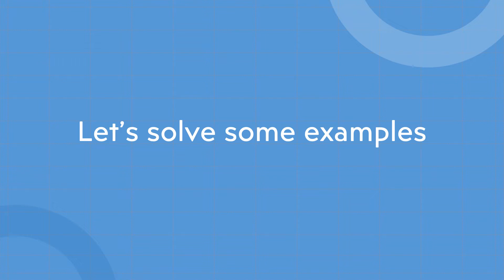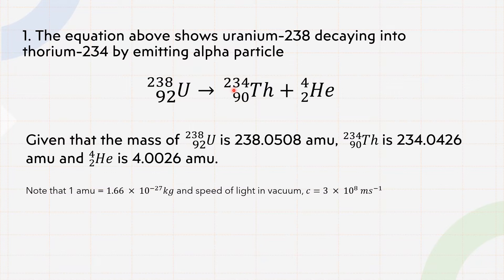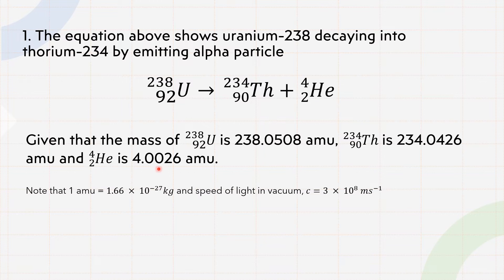Now to get a better understanding, let's solve some examples. The question shows uranium-238 decaying into thorium-234 by emitting an alpha particle. This is the equation, and given that the mass of uranium and the mass of thorium and the mass of the alpha particle are all provided.